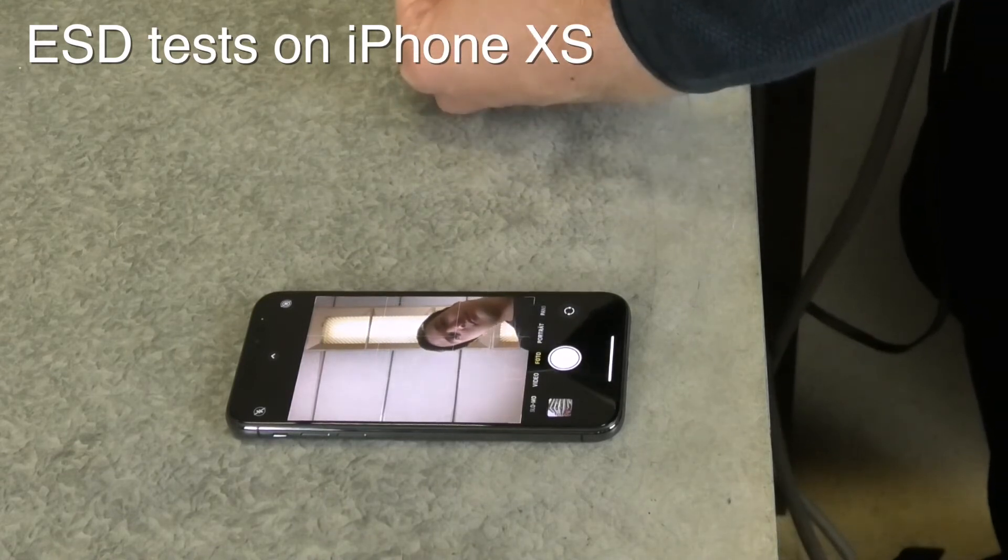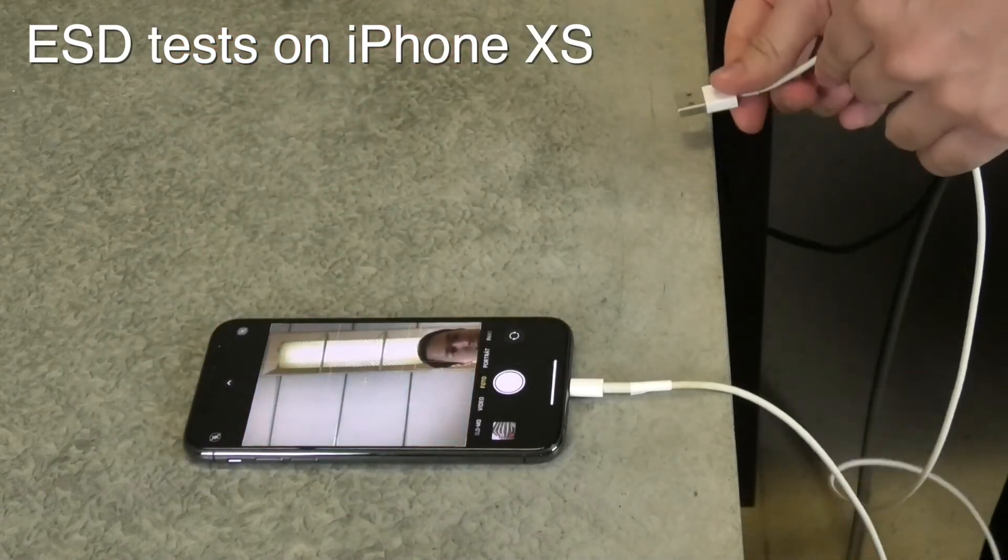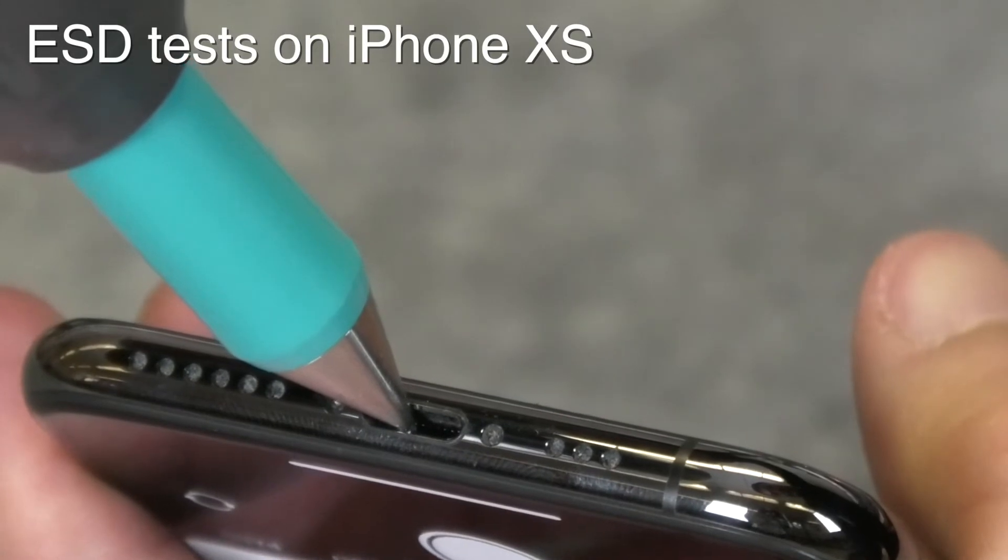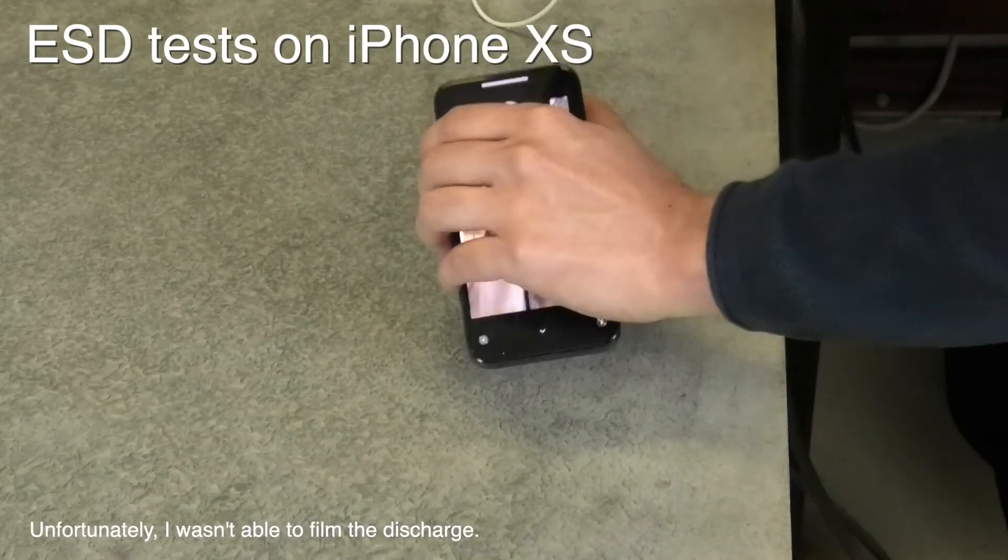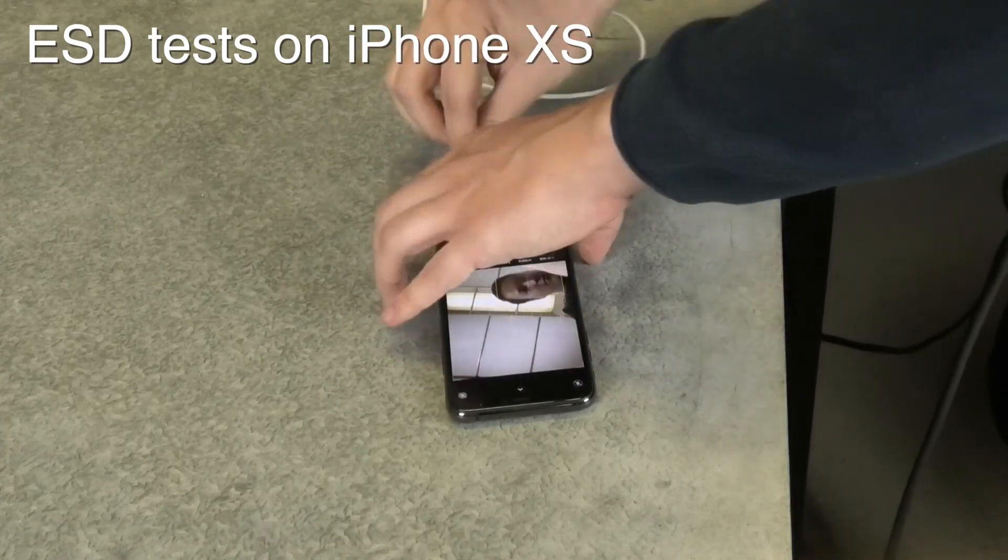But I have to discharge the phone again after each test. To do this I simply plug in the lightning cable and connect its ground to our metal plate. Now let's try the lightning port itself. Oh there was a spark. But it still works. Don't forget to discharge the phone again.